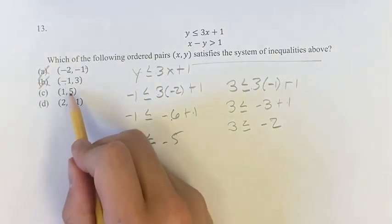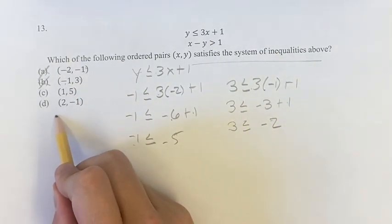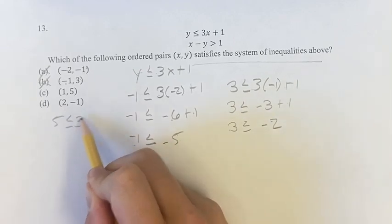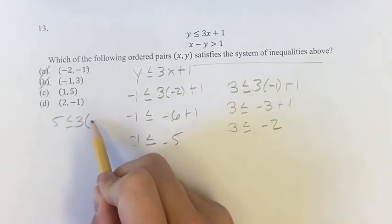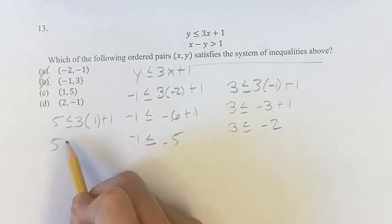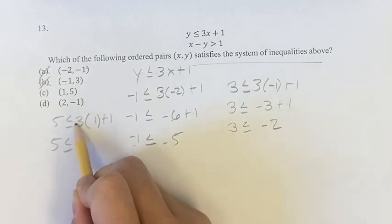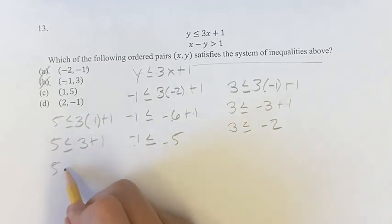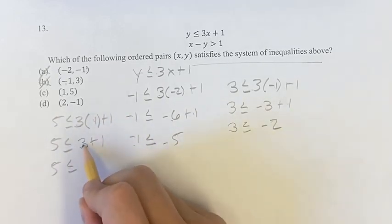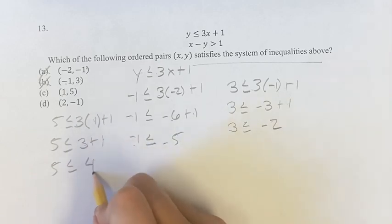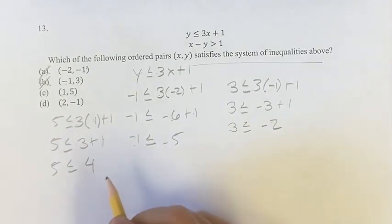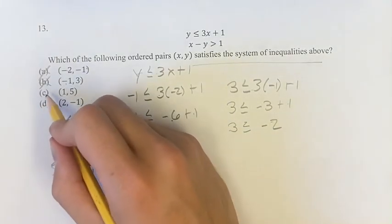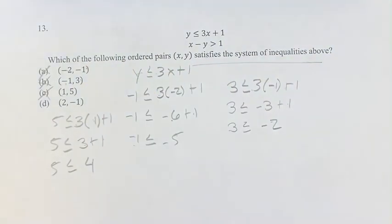For C, y = 5 ≤ 3(1) + 1. That gives us 5 ≤ 3 + 1, which is 5 ≤ 4. 5 is not less than or equal to 4 — 5 is greater than 4. So C is not your answer.